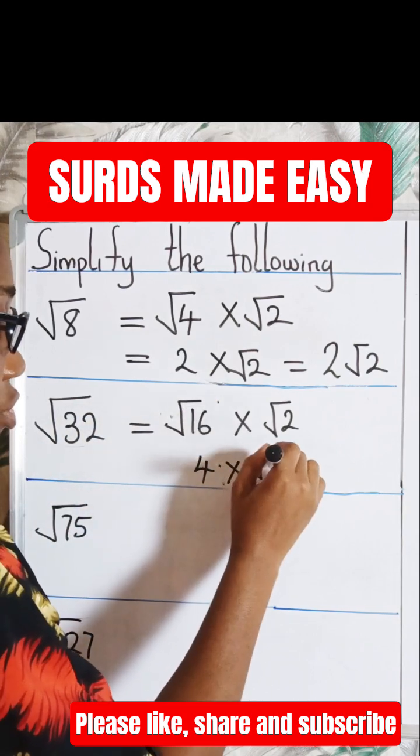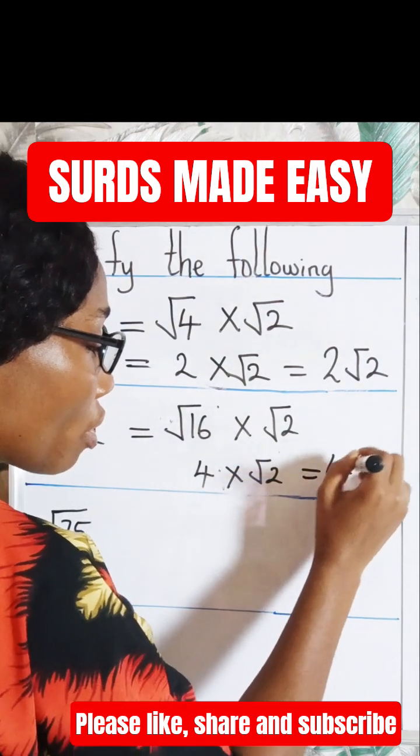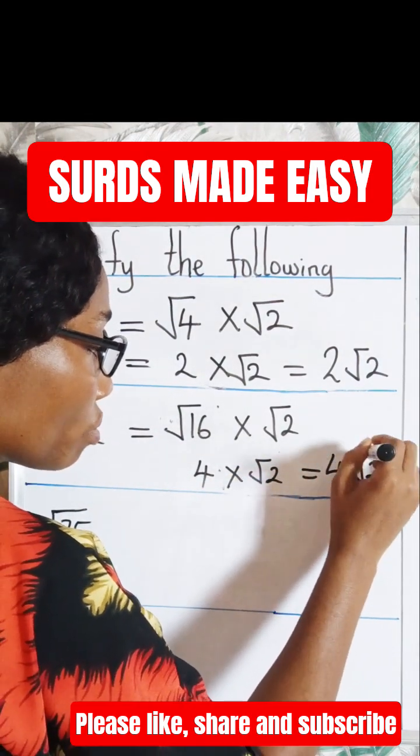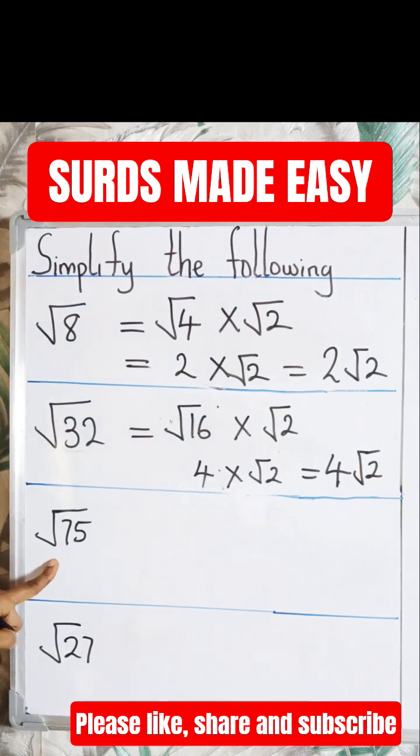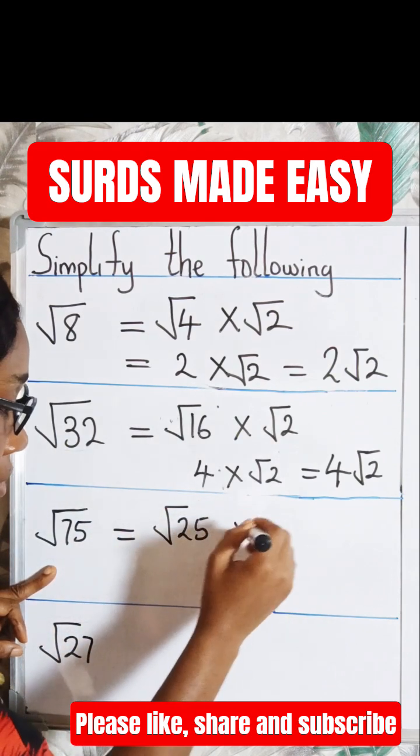So 4 times root 2 equals 4 root 2. Now let's quickly look at this one. The factors of 75, we can easily get root 25 times root 3. Root 25 times root 3 will give us root 75.